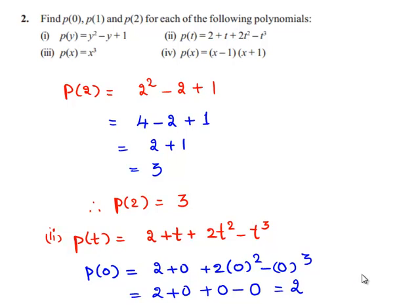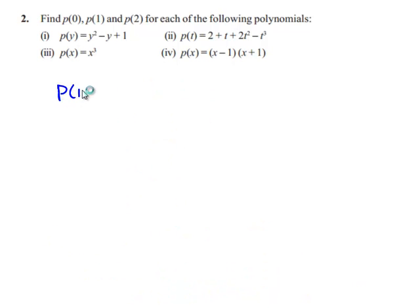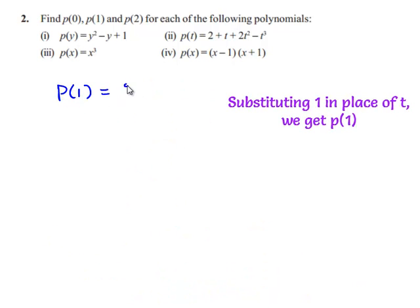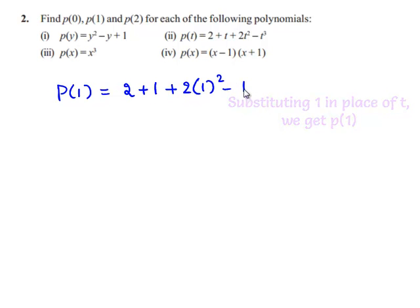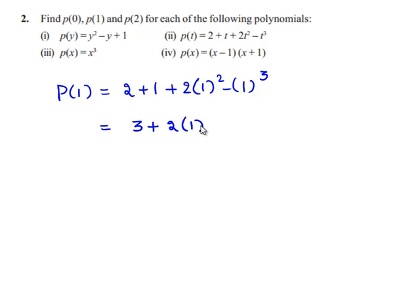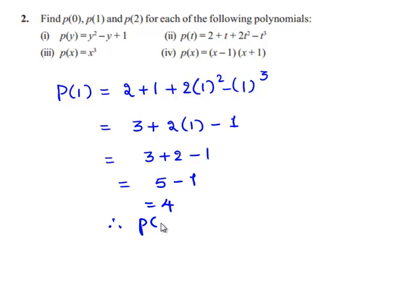Therefore, p of 0 is equal to 2. p of 1 is equal to 2 plus 1 plus 2 times 1 square minus 1 cube. 2 plus 1 is 3, plus 2 times 1 square, which is 1, and 1 cube is also 1. So 3 plus 2 minus 1 becomes 5 minus 1, which is 4. Therefore, p of 1 is equal to 4.